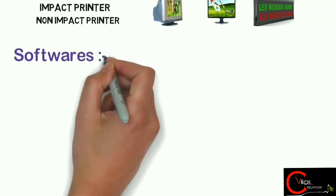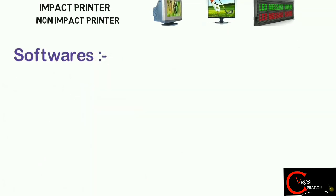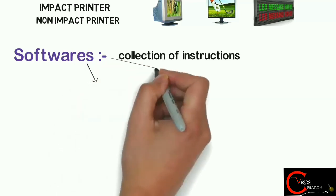Software. Now what is a software? A software is a collection of instructions that enable the user to interact with a computer, its hardware, or perform any tasks. Without software, computers would be useless. The software has been divided in two parts.